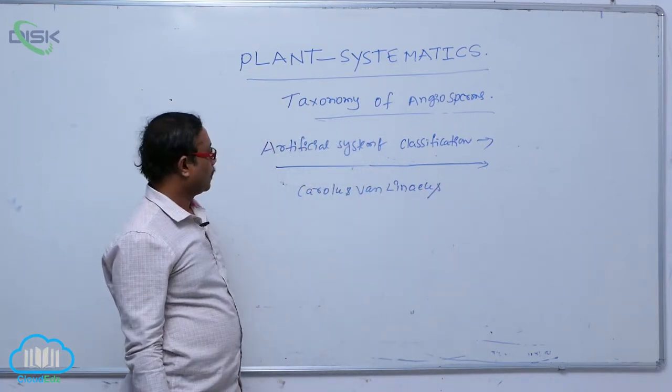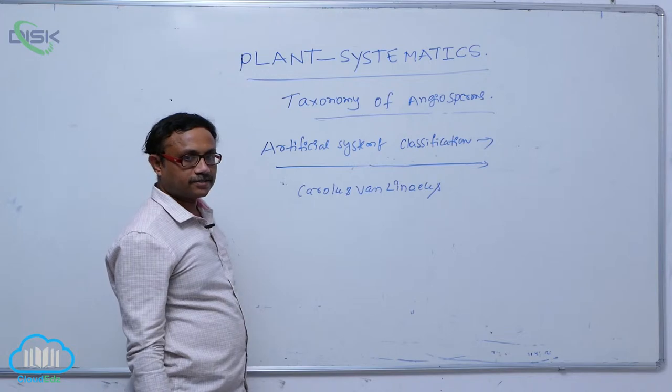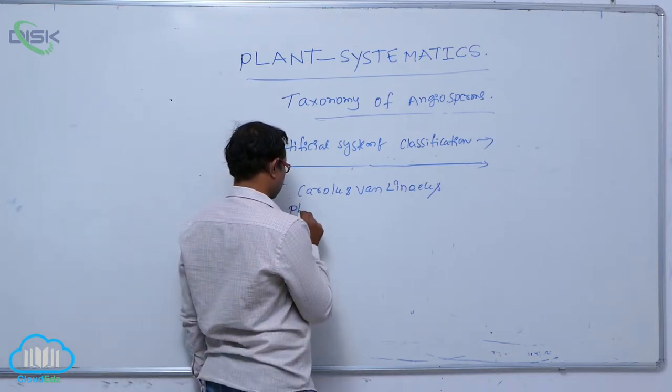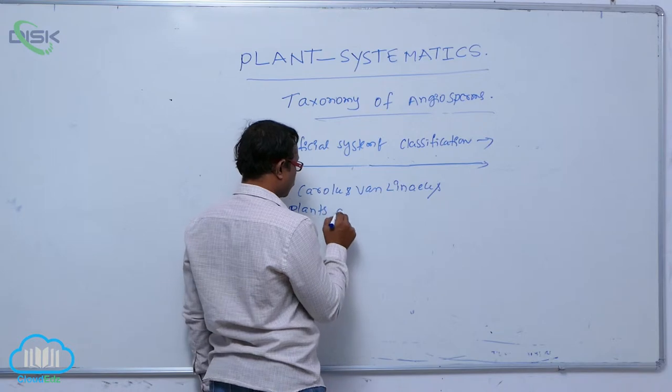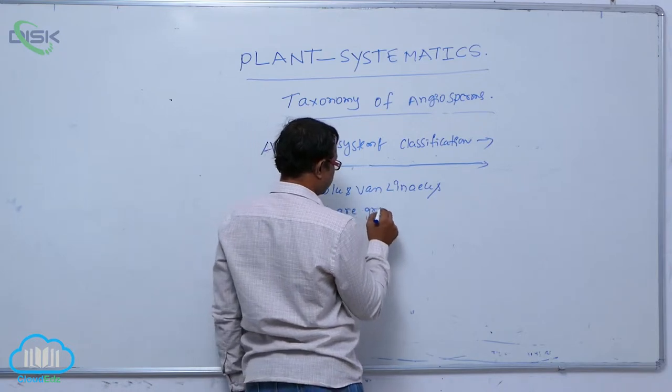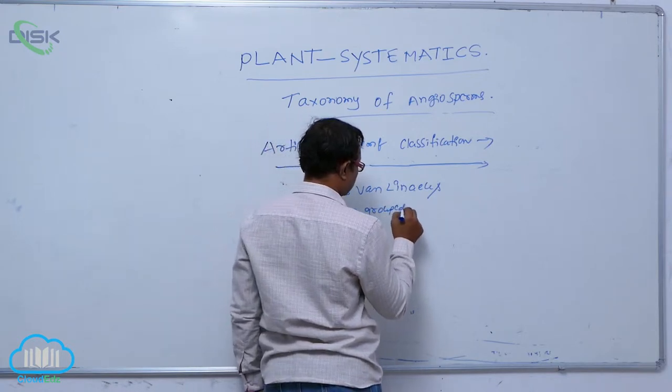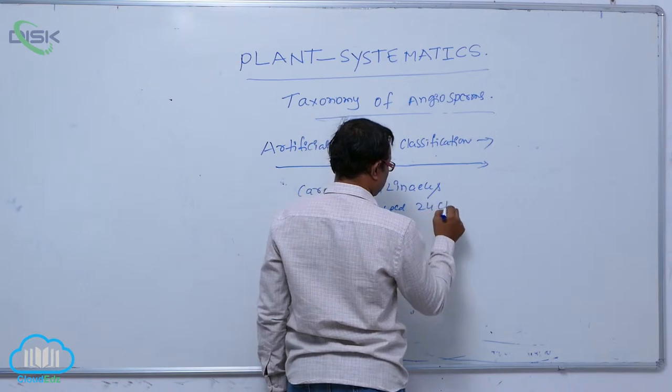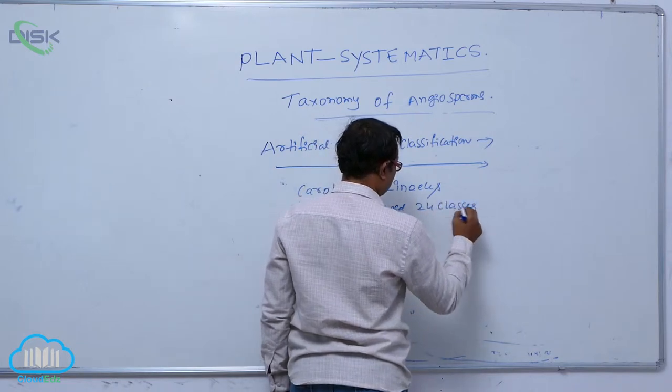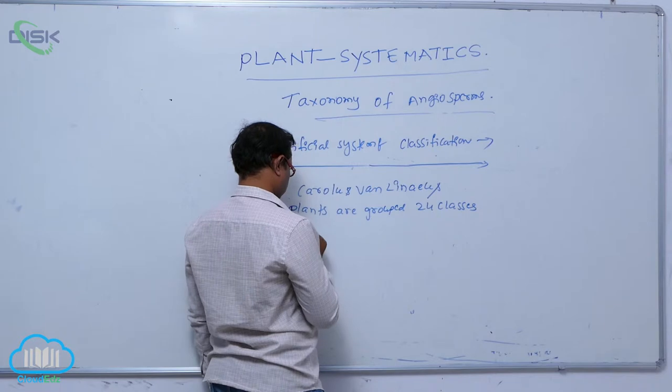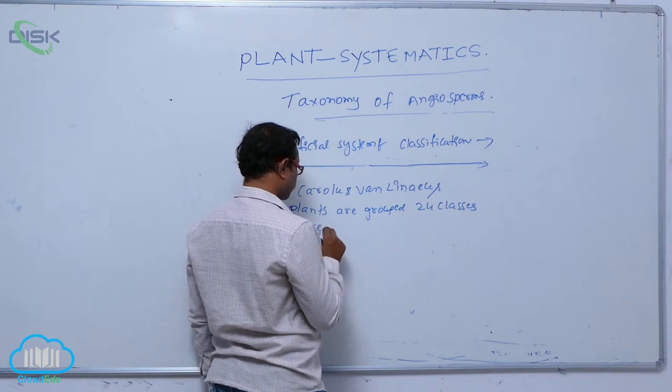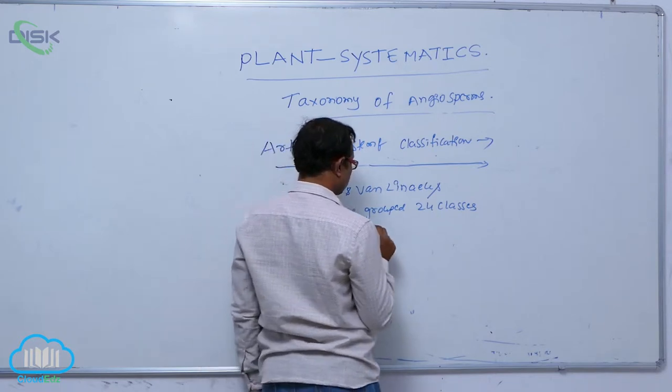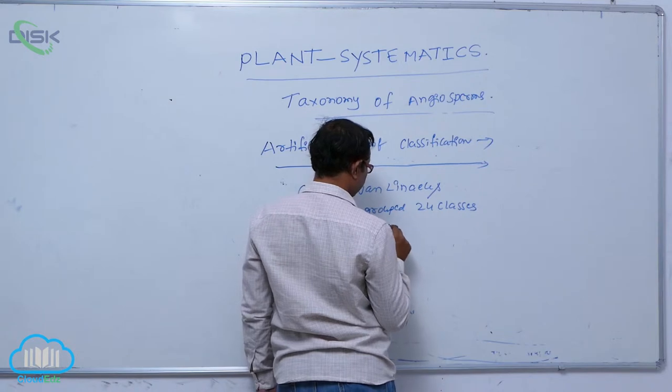According to Carolus Linnaeus, for the first time, plants were grouped into 24 classes based on sexual reproductive characters.